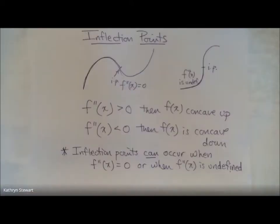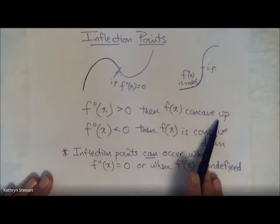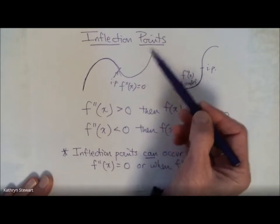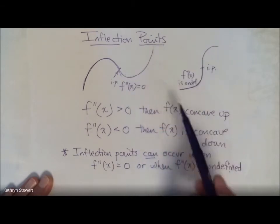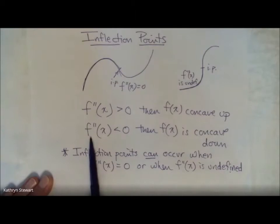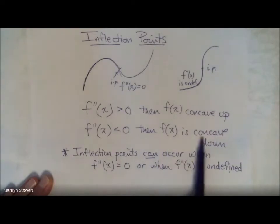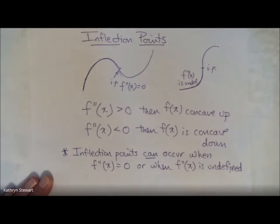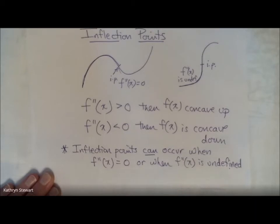Let's just remember concavity. When your second derivative is greater than zero, your function is concave up, because the slope is increasing — the derivative is changing in a positive way. When the second derivative is negative, your function is concave down; your first derivative is decreasing. Inflection points can occur — not necessarily, but they can occur — when the second derivative is zero or when the second derivative is undefined.